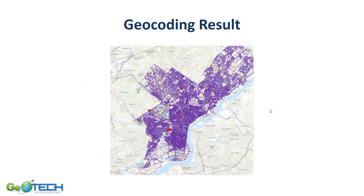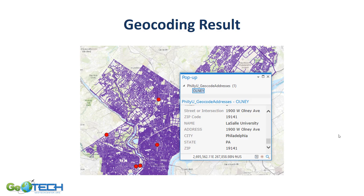Here is the result of the geocoding. You can see my streets in the city of Philadelphia, and all of those points represent the universities. Here I've highlighted one of the points — this is LaSalle University. The geocoder took the street name, determined it was an avenue and not a street or drive, identified the prefix as west and not east, then took that line segment and placed the point right where it needed to be.